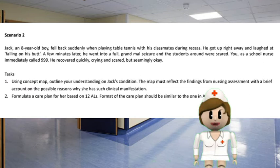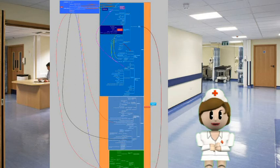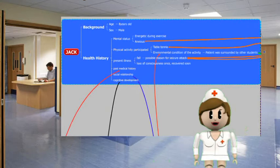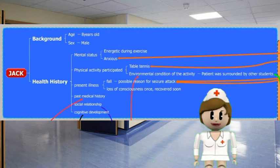In the concept map, it includes the assessment part, which is divided into three areas: Jack's assessment, school assessment, and parents' assessment. On the other hand, the map also includes Jack's background information. This part of the concept map is one of the main areas about Jack's background and health history.